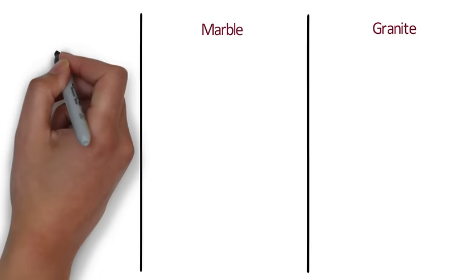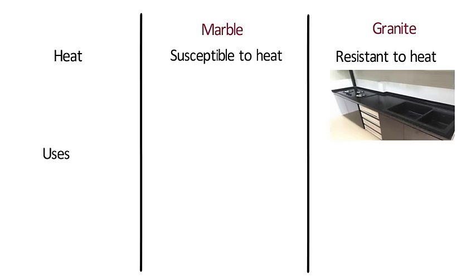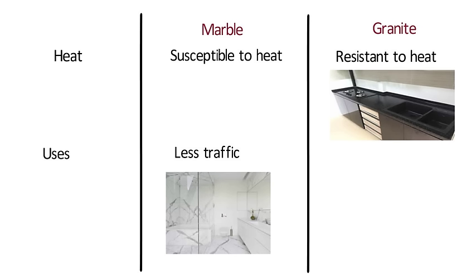In terms of heat resistance, marble is susceptible to heat, whereas granite is resistant to heat and can easily withstand hot cookware, making it perfect for kitchen tops. Marble is more appropriate in areas with less traffic like bathrooms, for vanities, tub decks, shower walls, and flooring. Granite's durable nature makes it suitable for kitchen countertops and floors where there is high food activity.